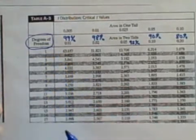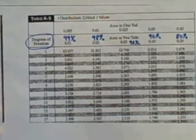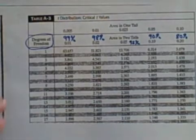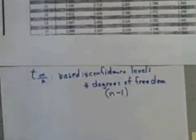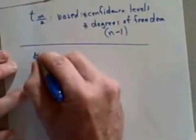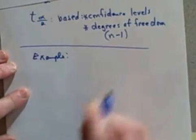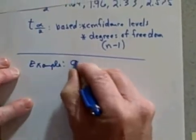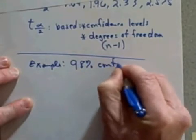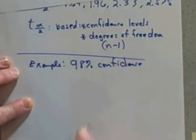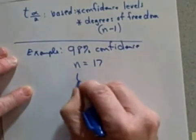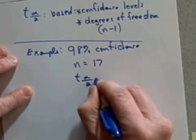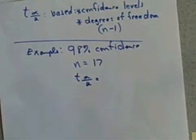So let's do an example or two. Let's say we want to do an example. I want to find the critical value for t if we have - let's write this here - example: if we are at 98% confidence and n, the sample size, is 17, what would be my t sub alpha over 2 value that I would use in my formula to find E, the margin of error?